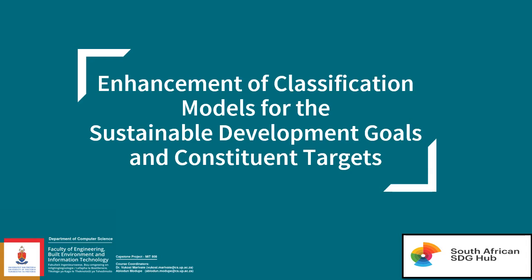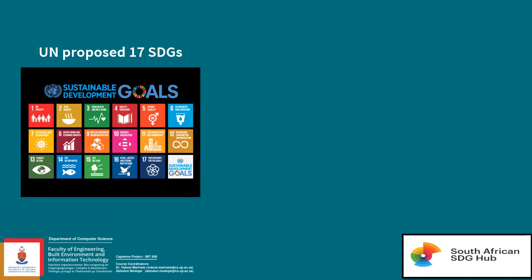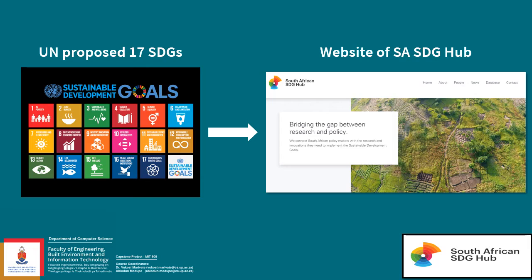The requirement for this project was to improve the classification models already in place. The United Nations adopted 17 Sustainable Development Goals as a roadmap to the well-being of humans and planet Earth. The SA SDG Hub created a website where research papers are connected to an SDG, with the aim of improving policy makers' access to relevant research. The SA SDG Hub want to improve their current classifier and also enable the automated classification of research articles added to their database in the future.